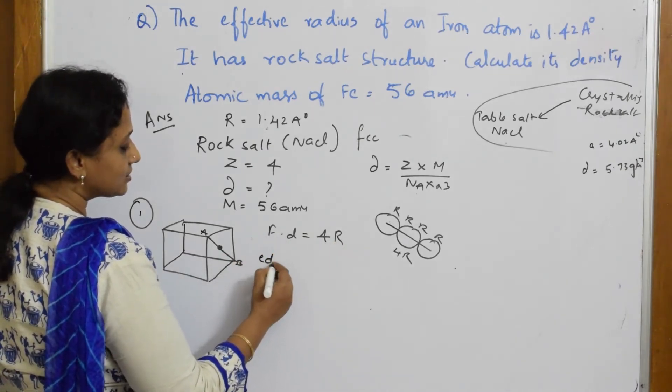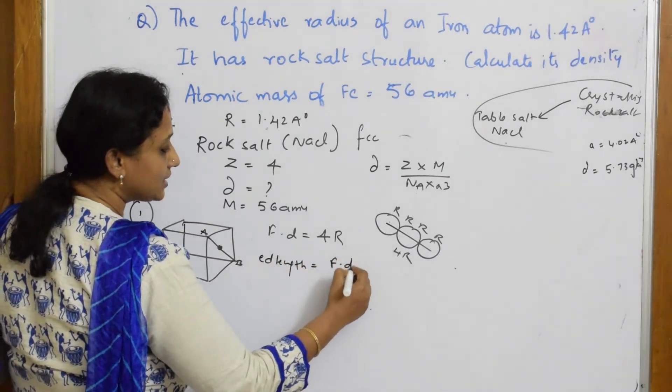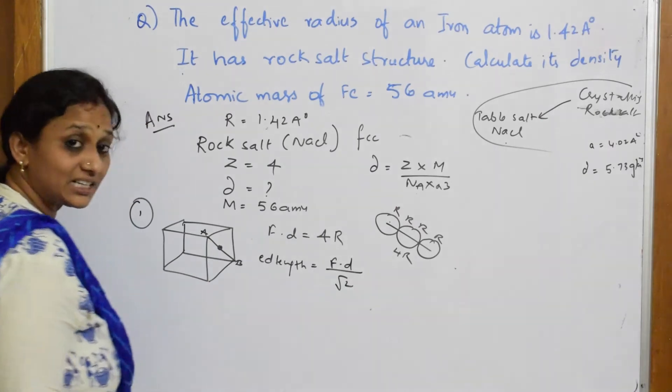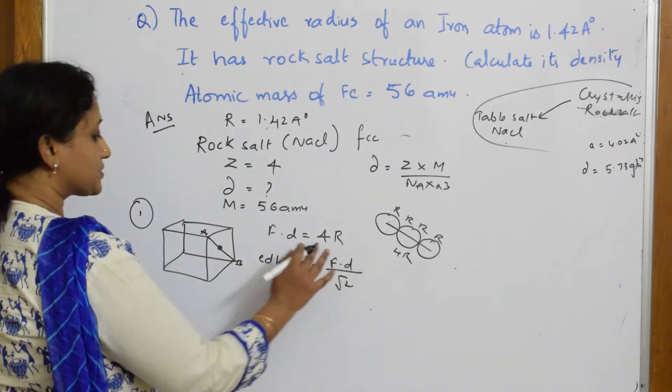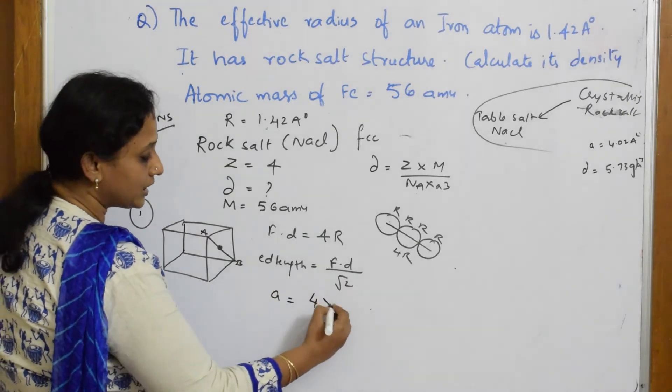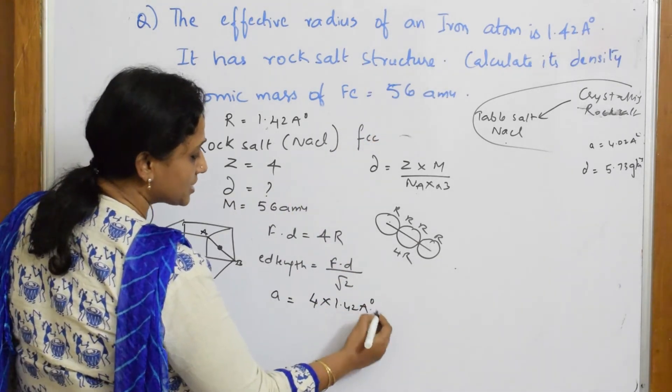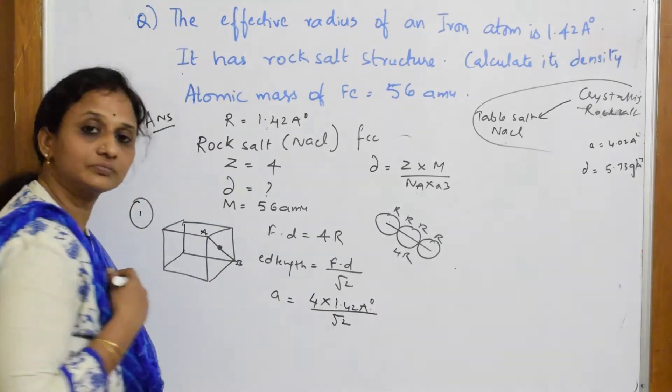Now here, edge length is equal to face diagonal by root 2. We have already done this N number of times. Now substitute this. Edge length is A. Phase diagonal is 4 into R. What is R? 1.42 angstroms divided by root 2.